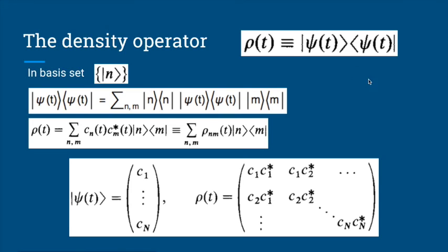More about the density operator: if we write it with the wave function in a basis, we express it as a sum of projections onto basis functions with their coefficients. Using the trick of inserting the identity twice — with indices N and M — dotting the bra wave function onto M gives C_M* and dotting the ket onto N gives C_N. Since these are just coefficients, they commute and we get: ρ = Σ_{N,M} C_N C_M* |N⟩⟨M|. This is our density operator in matrix form.